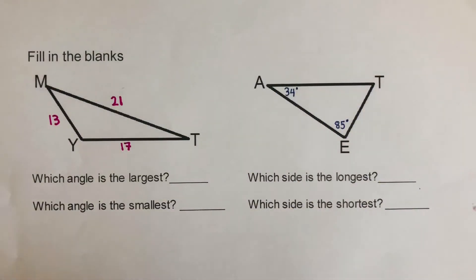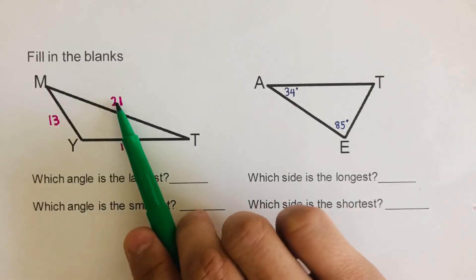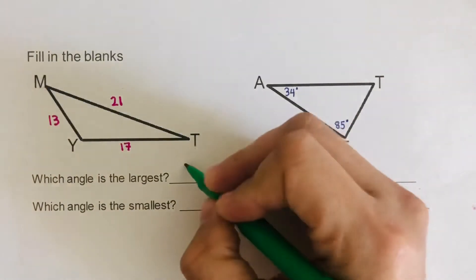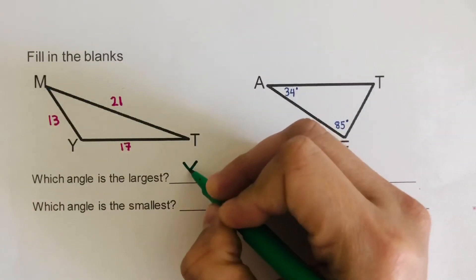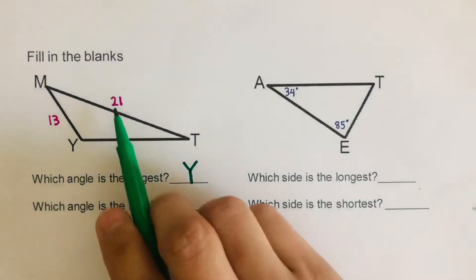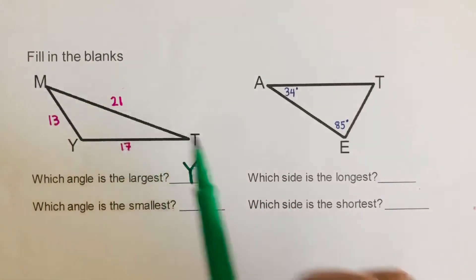Okay, we'll go over this. So again, the largest angle is across the longest side, 21 right here. So angle Y is the largest angle because 21 is the longest of all three sides.